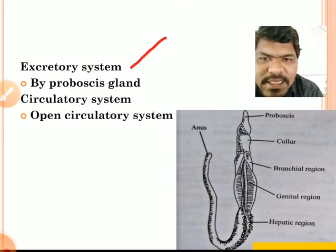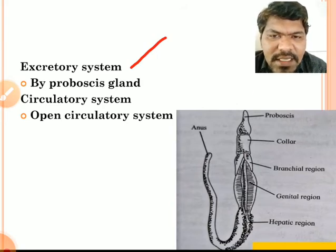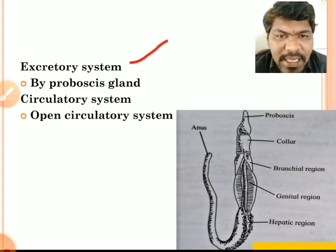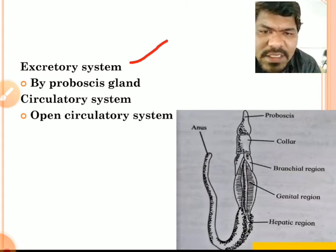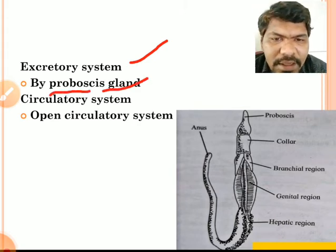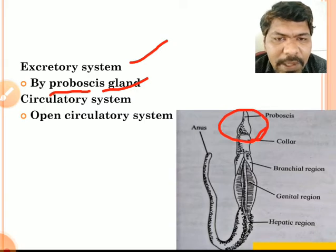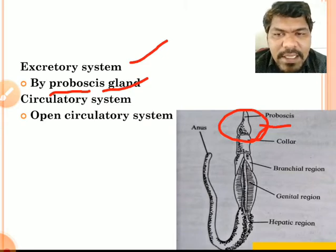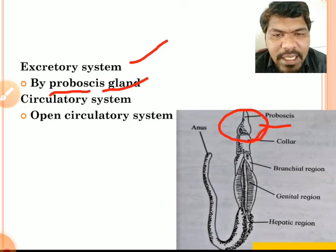Excretory system: there is a special structure present for the elimination of waste products, called the proboscis gland. The anterior part of the body is called the proboscis, and in the proboscis we find the proboscis gland. That proboscis gland collects waste products from the body and eliminates them outside — similar to how a kidney functions in human beings.